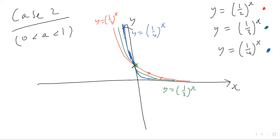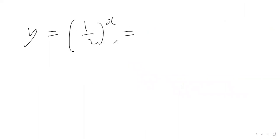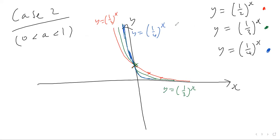One final point: consider y equals one half to the power of x. The number one half is the same as two to the power of minus one, and that's all raised to the power of x. Using laws of indices, we multiply the powers — minus one times x gives minus x — so y equals one half to the x is exactly the same as y equals two to the minus x. Similarly, y equals one third to the x is the same as y equals three to the minus x, and y equals one quarter to the x is the same as y equals four to the minus x.